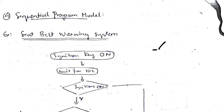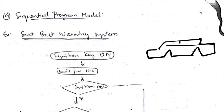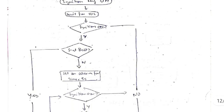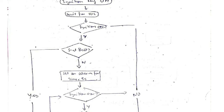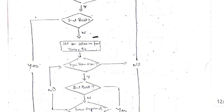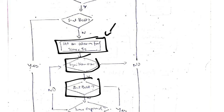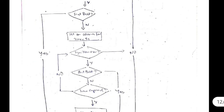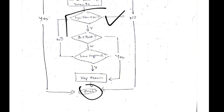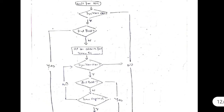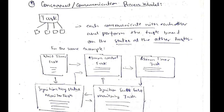The fourth is the sequential program model. Consider a seat belt warning system: if the car is on and the seat belt is not worn, it waits ten seconds, checks if the belt is still not on, sets a five-second alarm timer, and if the ignition is still on and the belt is not worn, sounds the alarm. If the belt is worn, the alarm is skipped and the program ends.